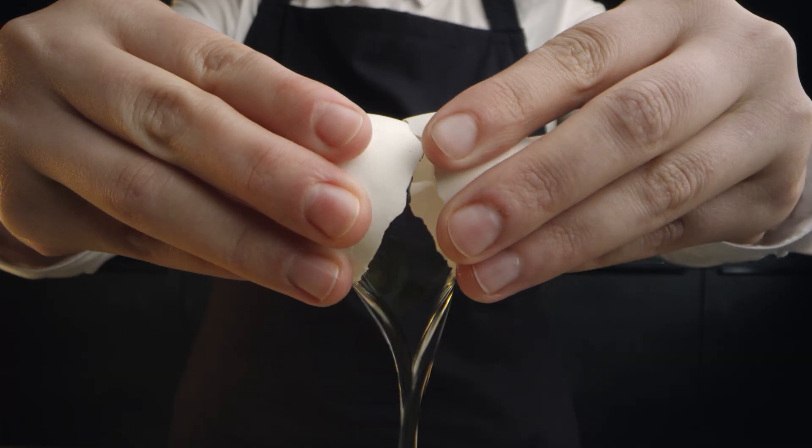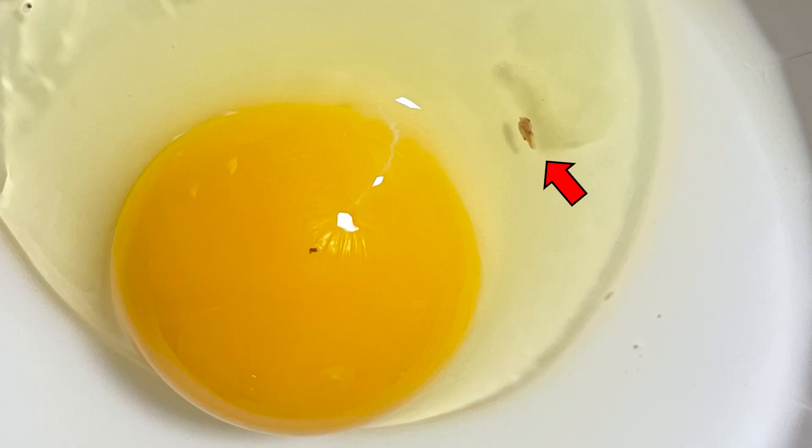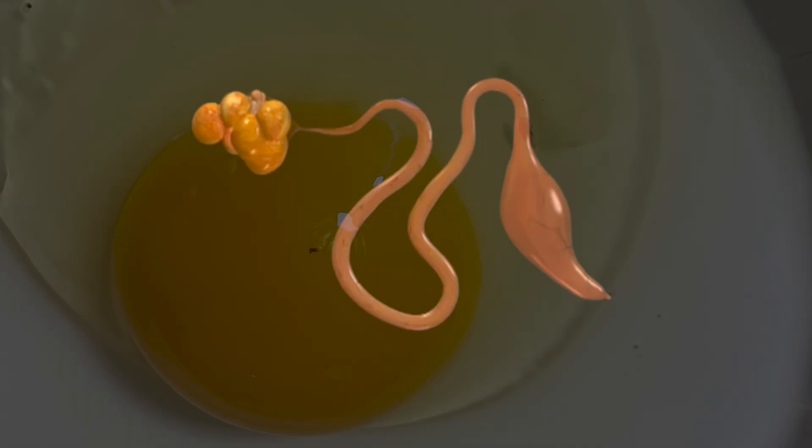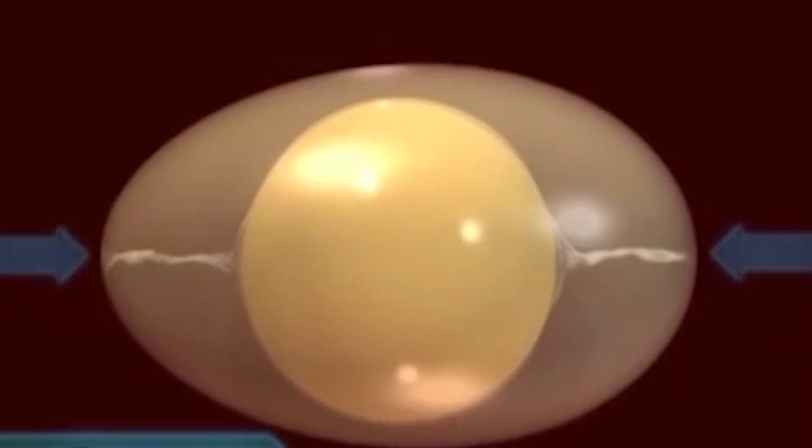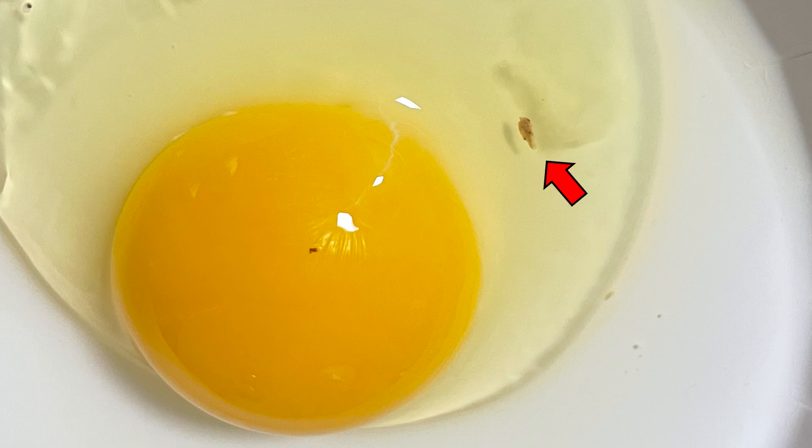Lastly, sometimes when we eat eggs, we may come across brown specks. These are called meat spots, and they are tissues that have separated from the ovary or oviduct. They are present in the egg from the time of formation, and it is safe to eat them.